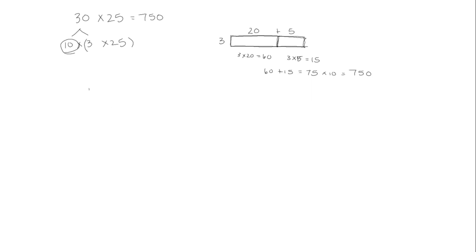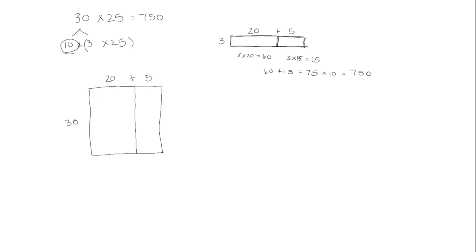Now we're going to do a slightly different area model so we can do this all in one step. One factor is 30 and we write it just as 30 because there are only units of 10 — we don't have any ones, so we'll keep them all together. Then we're going to decompose 25 into tens and ones, and just as we did with the single digit factor, we're going to figure out the area of each of the smaller rectangles.